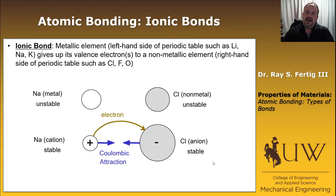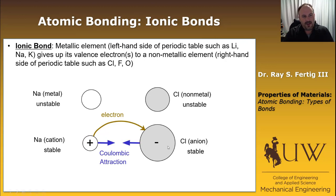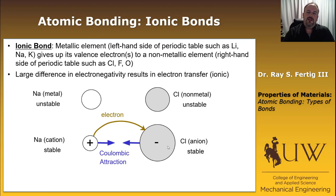In the case of an ionic bond, we have a metallic element on the left-hand side of the periodic table — something like lithium, sodium, or potassium — and it's going to give up its valence electron to some non-metallic element on the right-hand side like chlorine, fluorine, or oxygen. For example, a sodium atom gives an electron to a chlorine atom. The chlorine becomes a negatively charged ion, and the sodium becomes a positively charged ion, and they're attracted together via Coulombic attraction. The key feature that causes ionic bonding is when you have large differences in electronegativity, which typically favors electron transfer.